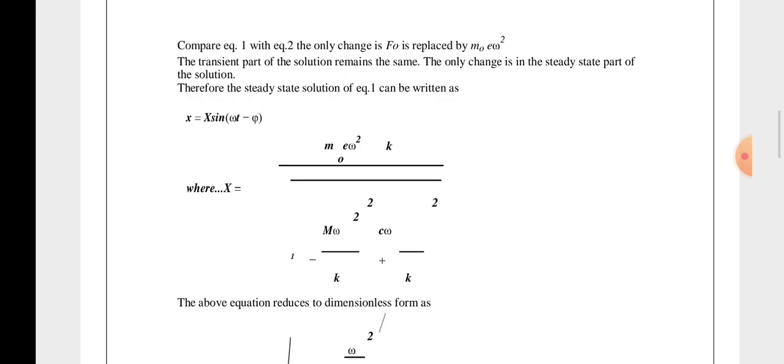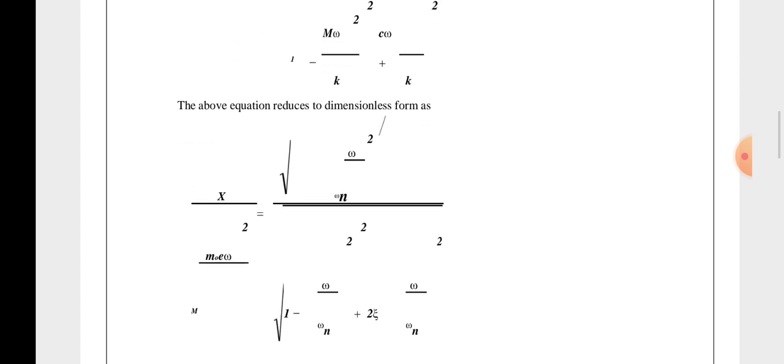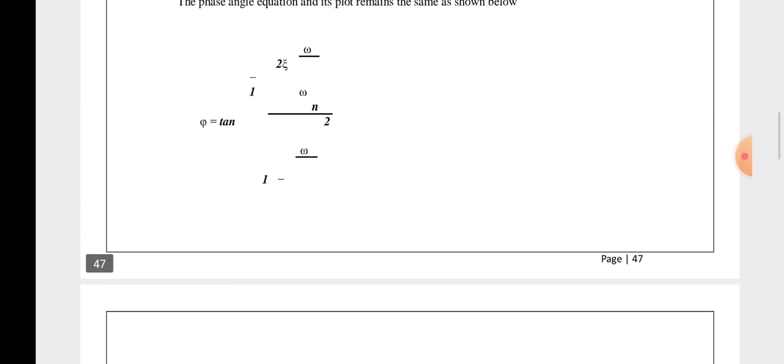So capital X equals m0 e ω² into k divided by (m ω² - k)² plus (c ω)². Now after reductions what we got here is φ equals tan inverse of 2ζ ω/ωn divided by (1 - ω²). So this is the φ that is phase angle we got.